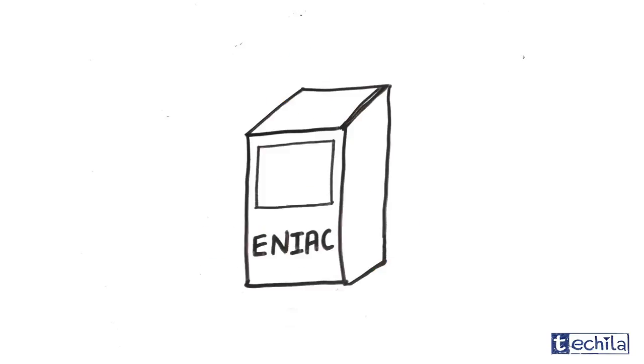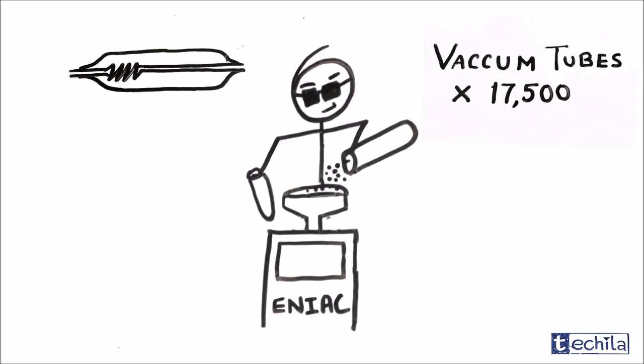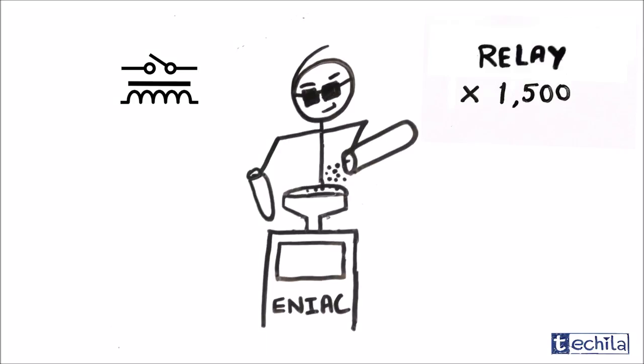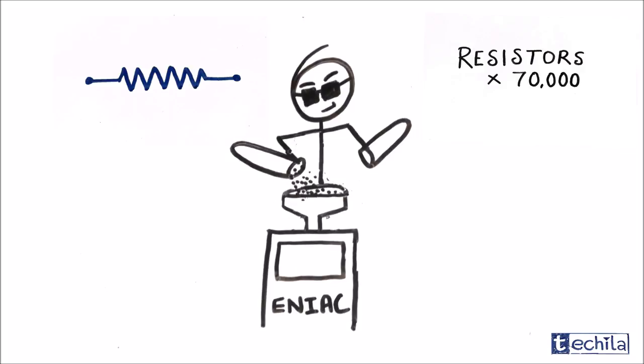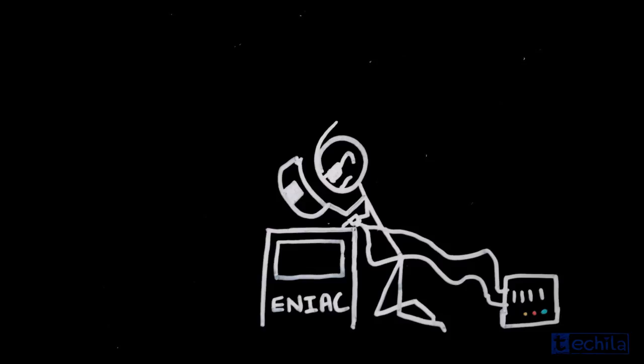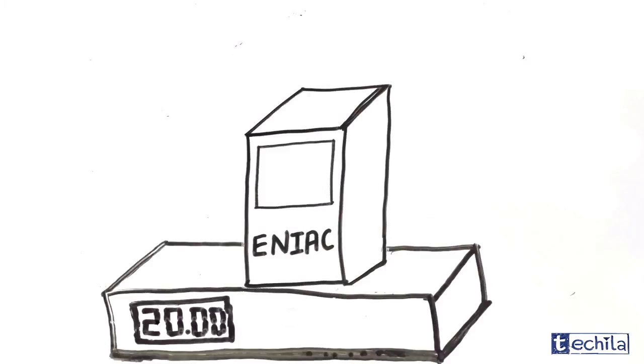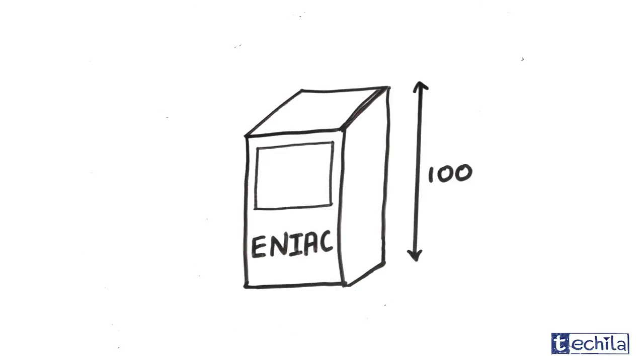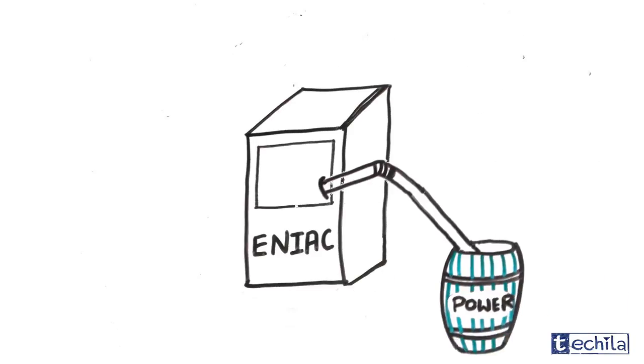Before the transistor, a computer ENIAC built by the US Army contained 17,500 vacuum tubes, 7,200 crystal diodes, 1,500 relays, 70,000 resistors, 10,000 capacitors and 5 million hand-soldered joints. It weighed more than 30 short tons and was roughly 8 by 3 by 100 feet in size and occupied 1,800 square feet and consumed 150 kilowatts of electricity.